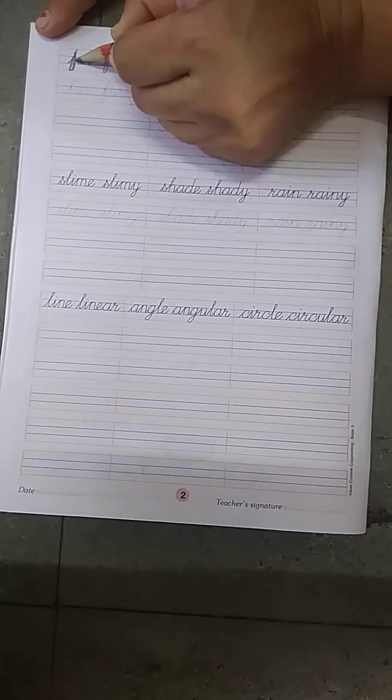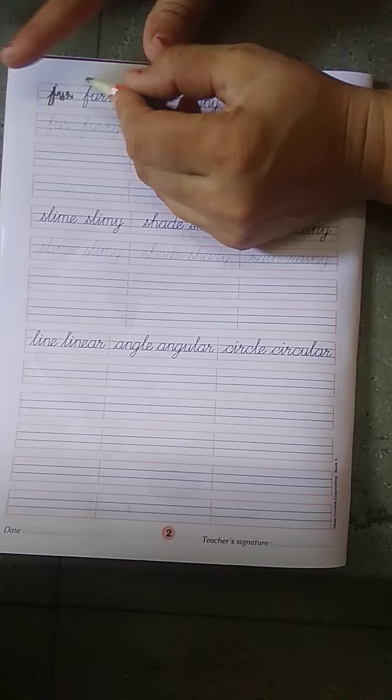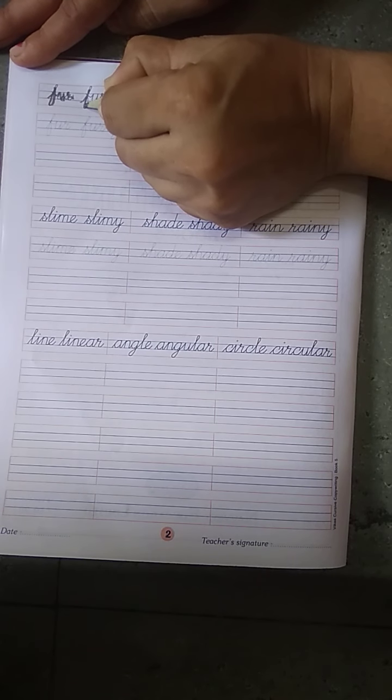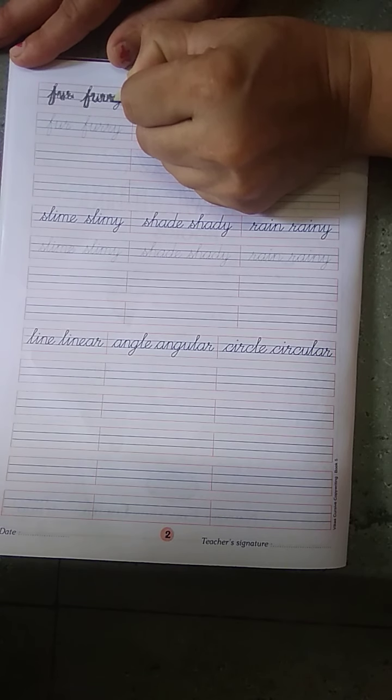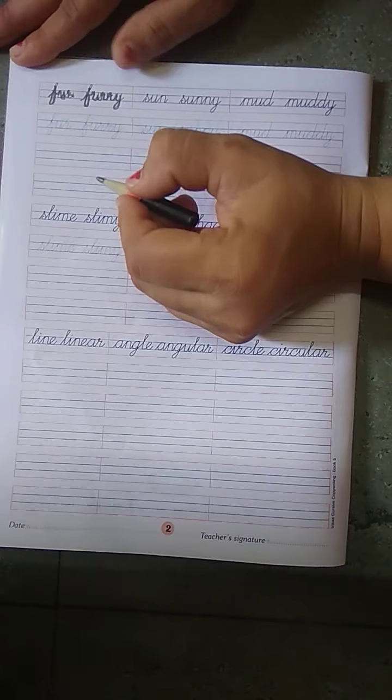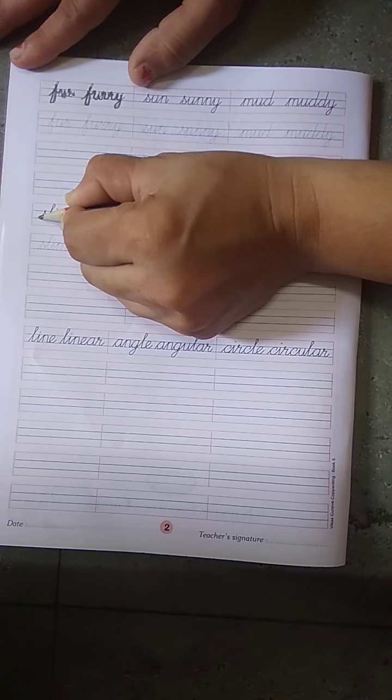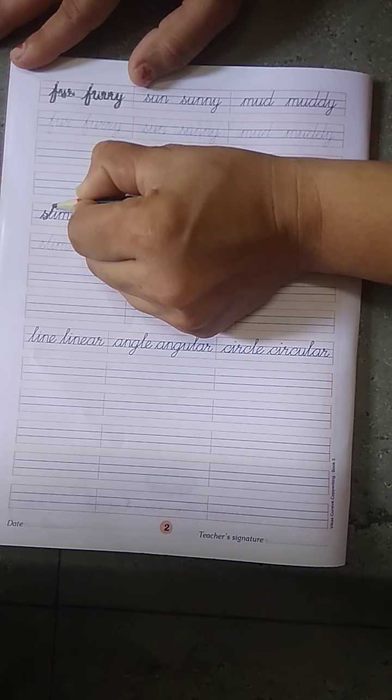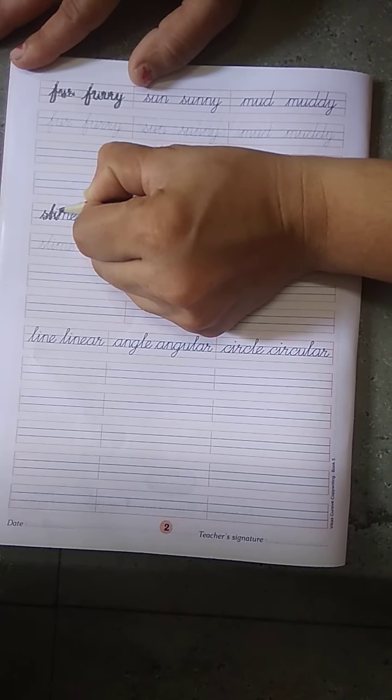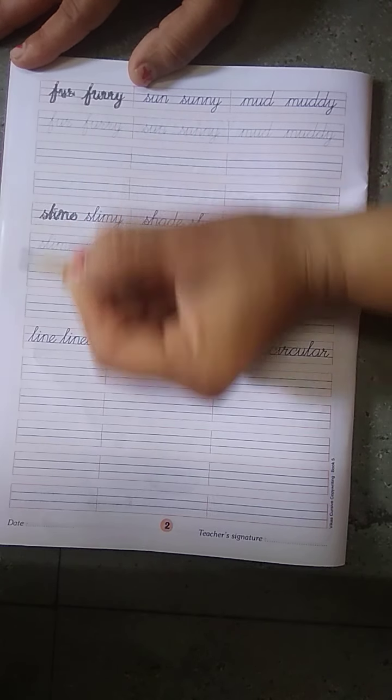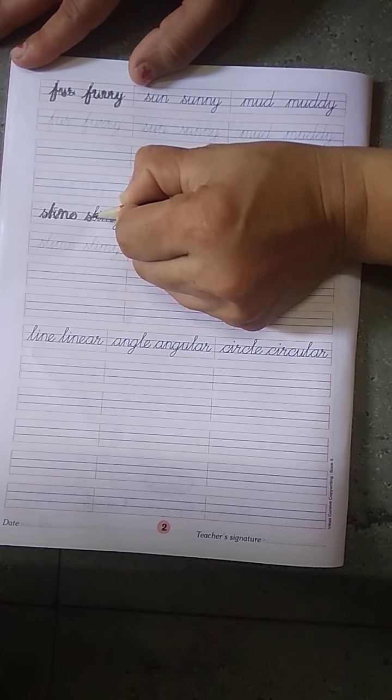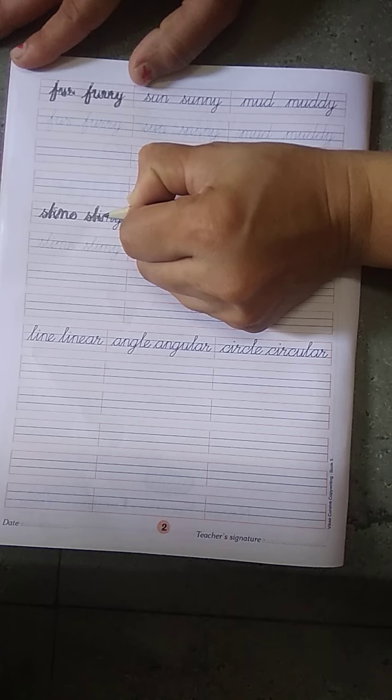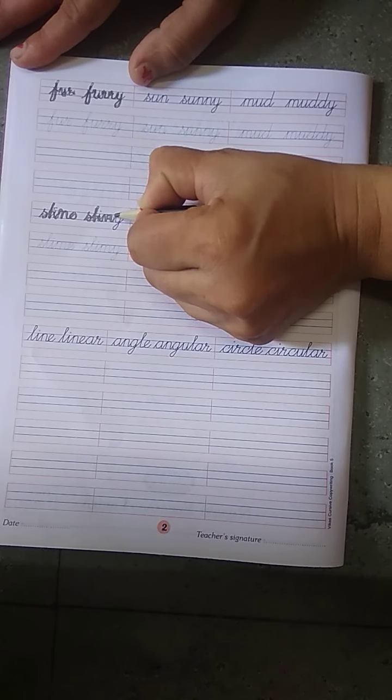F, U, R. Then F, U, R, R, Y. Okay. Then Shiny. S, H, I, N, Y. Then Shiny. S, H, I, N, N, Y.